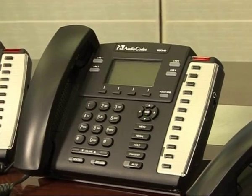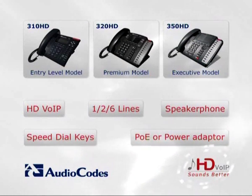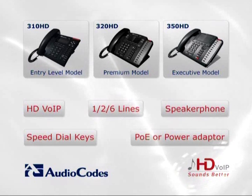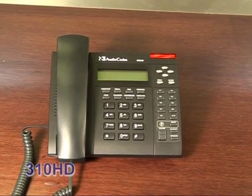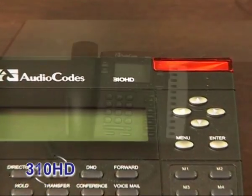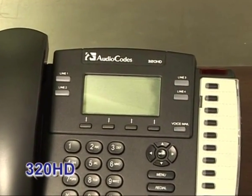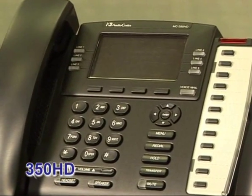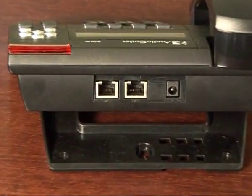AudioCodes 300HD series of high-definition IP phones expands AudioCodes voice over IP product offering for the enterprise and service provider markets. The series offers three phone models suited to the requirements of different types of business users. The 310HD is the one-line entry-level IP phone with a basic display and user interface. The 320HD is the four-line premium model including a large monochrome LCD screen. The 350HD is the six-line executive model with a color LCD screen. All models support HD VoIP, and Power over Ethernet is optional on all models.